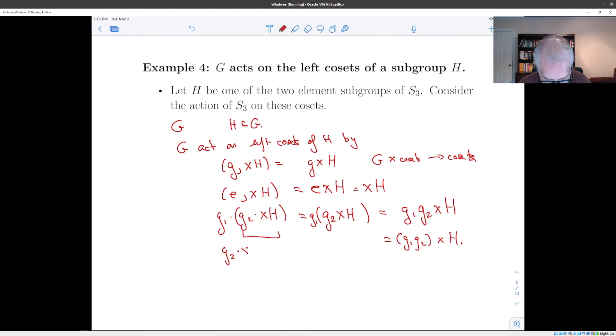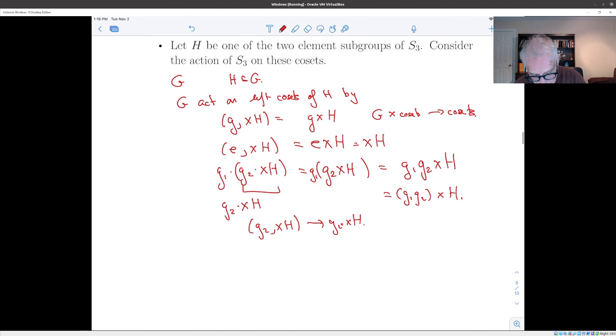I'm switching back and forth between two notations here. When I write g_2 dot xH, this is the same thing as the action on the pair (g_2, xH). And sometimes I write the dot, meaning there's an action. In the case here where I'm dealing with a group, I don't always write the dot because it is just the group multiplication.